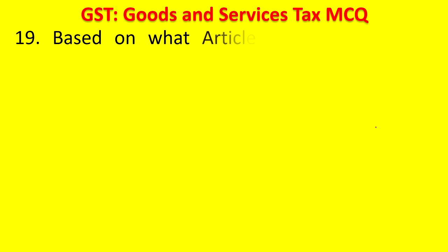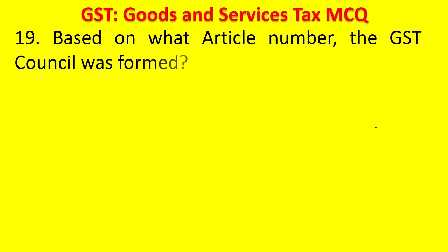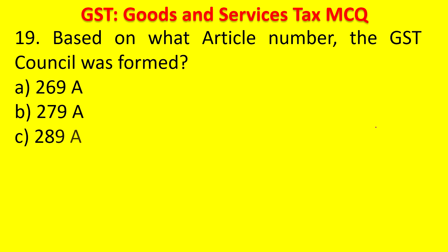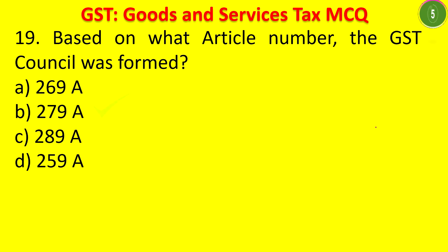Question 18: Under which article number was the GST Council formed? Options: 269A, 279A, 289A, 259A. The answer is Article 279A.